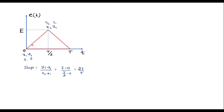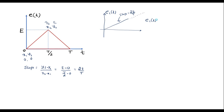So in this E of t, the first signal consists of a ramp signal — I will call it E1 of t. E1 of t is a ramp signal which begins at t equal to 0 and the slope is 2E/T. This ramp signal will continue till infinity. So I can represent E1 of t as: E1(t) = (2E/T) · t · u(t).